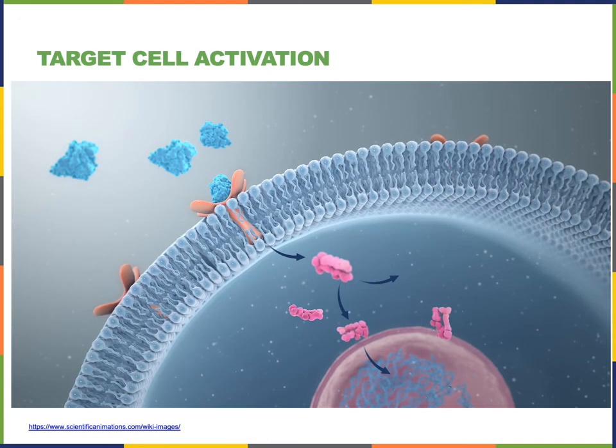In order for a hormone to affect the activity of a target cell, the target cell must have receptors to detect the hormone. The hormone binds to the receptor, and then the receptor can stimulate a variety of changes in the function of the cell. For example, a hormone could alter the permeability of the plasma membrane of the target cell.